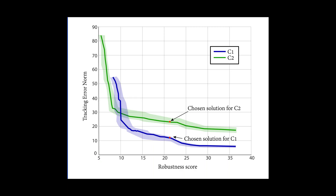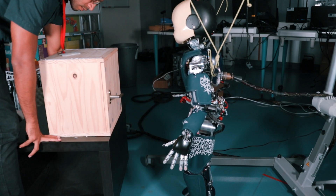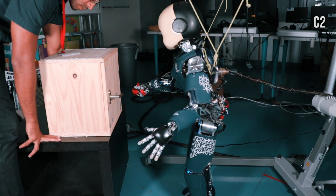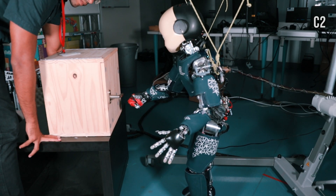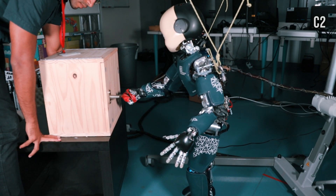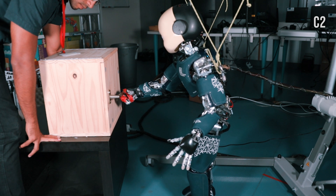Let's now consider a different controller that tracks more trajectories. Let's learn a control configuration that allows us to teleoperate the robot. With the learned control configuration, we can perform several tasks.